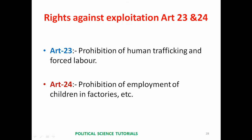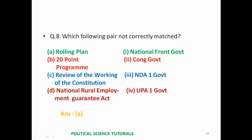Question 8: Which of the following pairs is not correctly matched? Options: Rolling Plan–National Front Government, 20-Point Program–Congress Government, Review of the Working of the Constitution–NDA 1 Government, National Rural Employment Guarantee Act–UPA 1 Government. The answer is A — Rolling Plan is not correctly matched with the National Front Government.